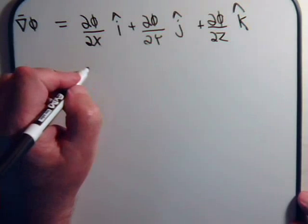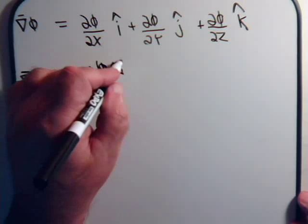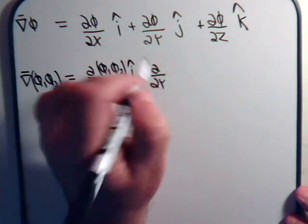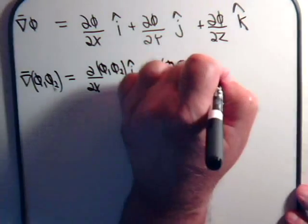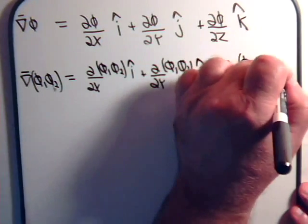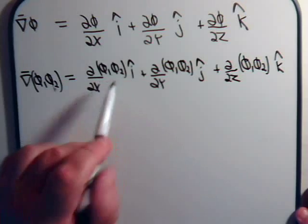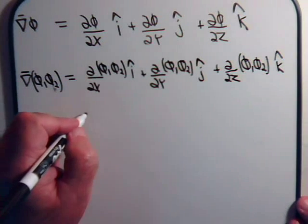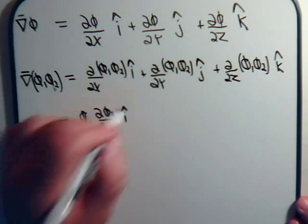That will give us the partial with respect to x of p1 times p2 as the i component of our gradient vector, plus the partial with respect to y of that same product as the j component, plus the partial with respect to z of the same product p1·p2 as the k component. Here we're taking the partial derivative of two functions multiplied together, and we're going to have p1 held constant times the partial of p2 with respect to x, times i, plus...